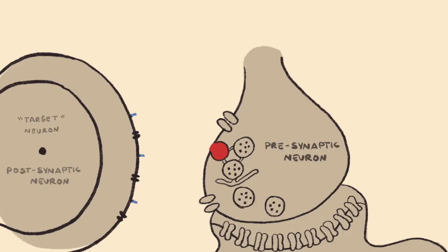So what happens to excess neurotransmitters that do not bind to receptors? Once action potentials cease to be generated by the presynaptic neuron, neurotransmitters are no longer released, and any excess neurotransmitters in the synaptic cleft need to be removed. Removal of excess neurotransmitters is very important to ensure that their effects are not abnormally prolonged or abnormally intense.